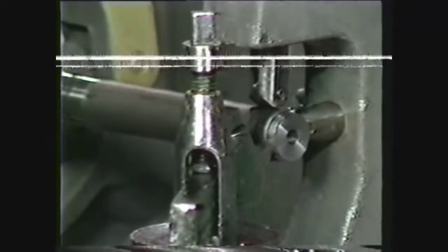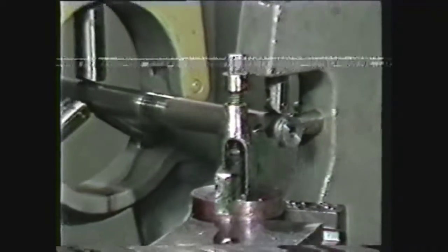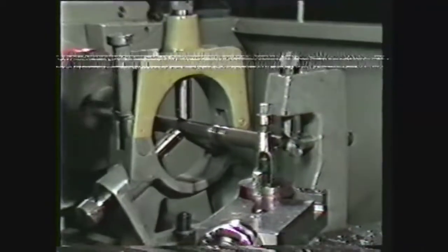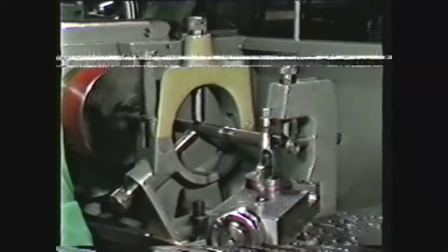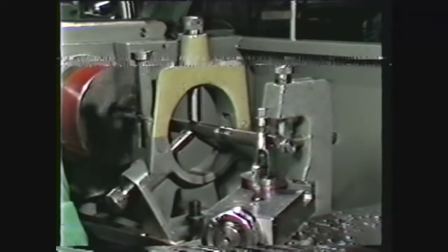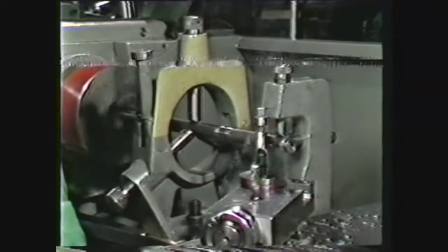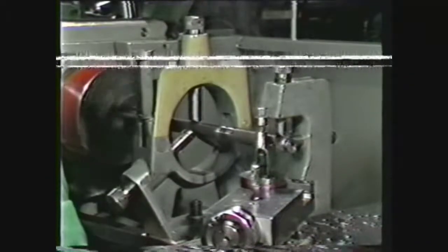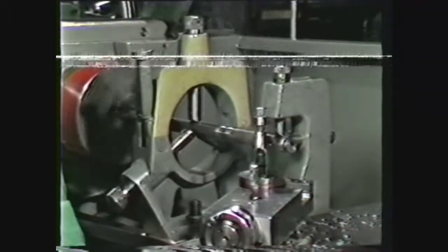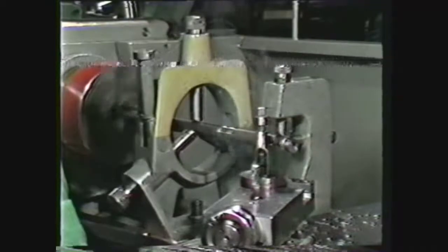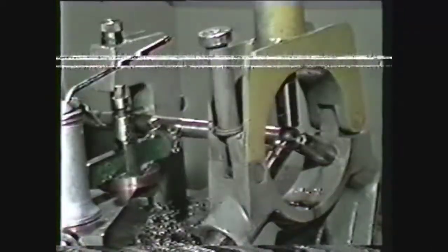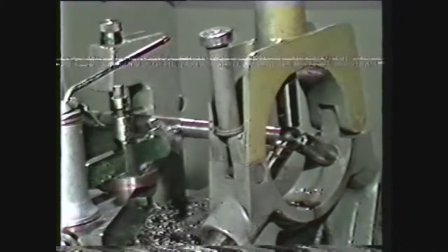If a workpiece is not equipped with center holes, a steady rest can be used to support the center of the work. The follower rest can then be used opposite the tool to begin machining on the tailstock end of the work. For further machining, the steady rest can be moved to the outer end of the work and the operation completed.